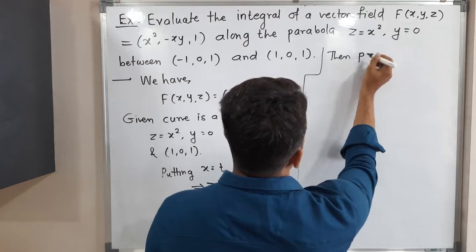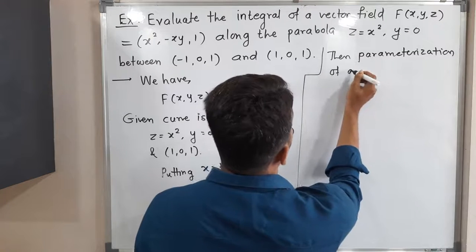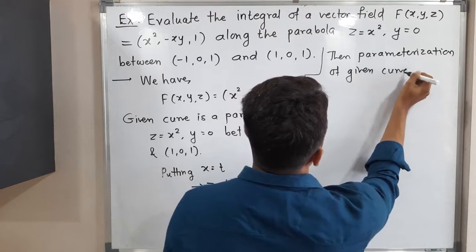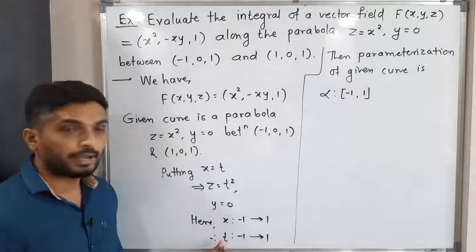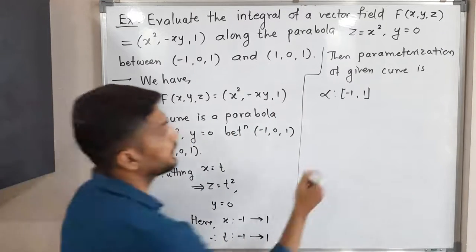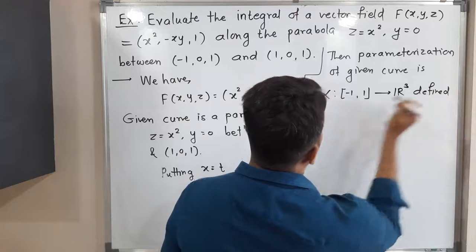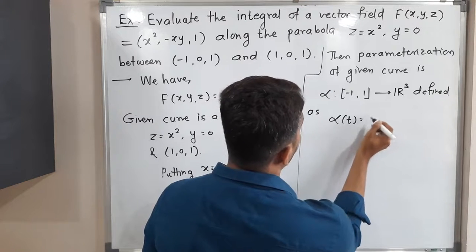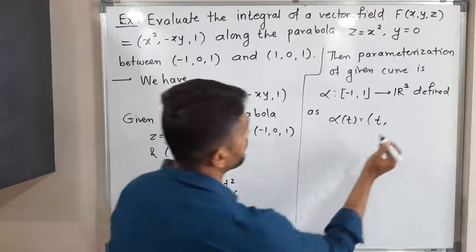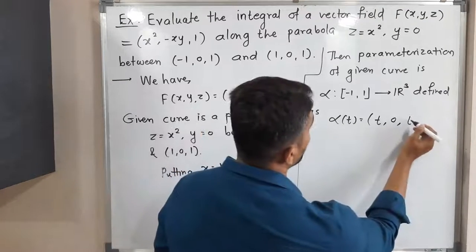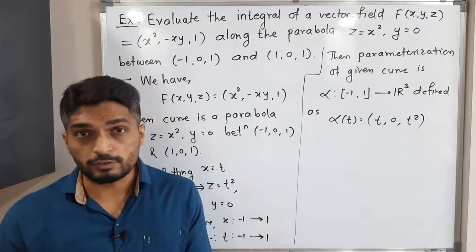The parametrization of the given curve is denoted by α, defined on the closed interval [-1, 1] — since t varies from -1 to 1 — with codomain ℝ³. It is defined as α(t) = (x, y, z) = (t, 0, t²). So α(t) = (t, 0, t²).